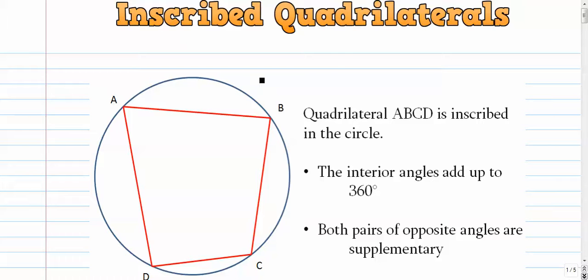All right, a lesson on inscribed quadrilaterals. What happens when we have a four-sided polygon with vertices on the circle?